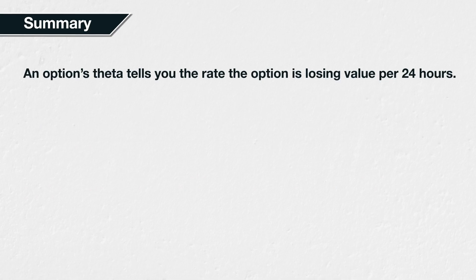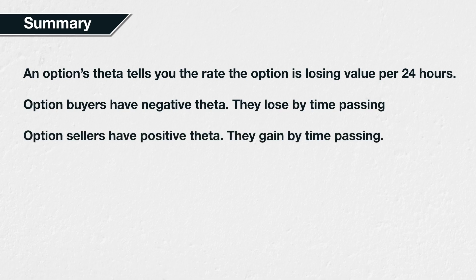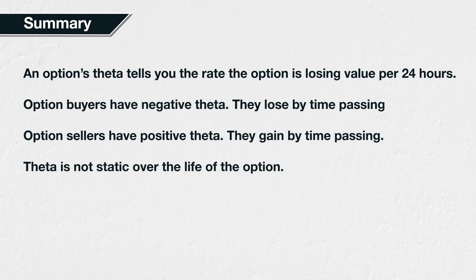In summary, an option's theta tells you the rate at which the option is currently losing value per 24 hours, assuming that everything else — like the underlying price and implied volatility — remains the same. Option buyers have negative theta, meaning they will lose value as time passes. Option sellers have positive theta, meaning the loss in value of the option they have sold represents a gain for them. As with delta, theta is not static over the lifetime of the option; while theta measures the sensitivity of the option price to time, theta itself has sensitivity to various parameters, which we will cover throughout the rest of section 9.